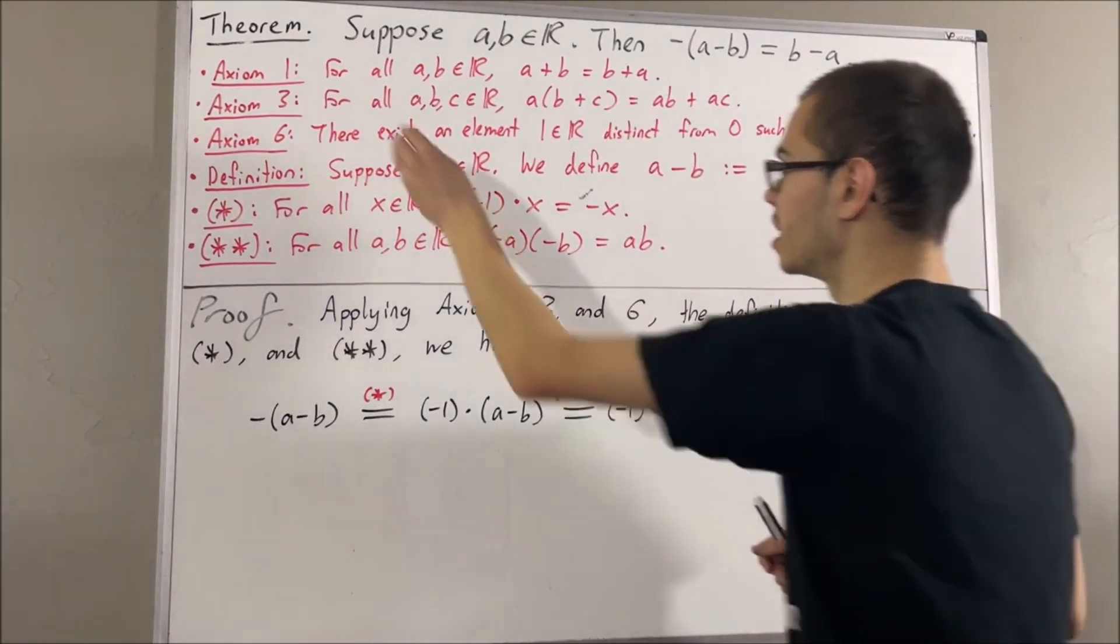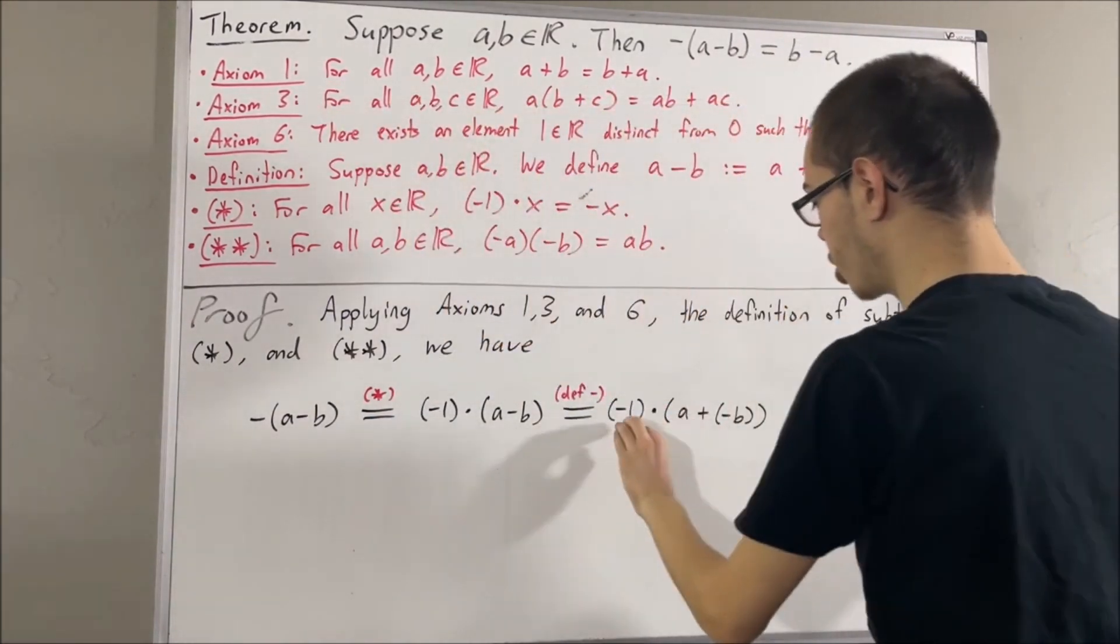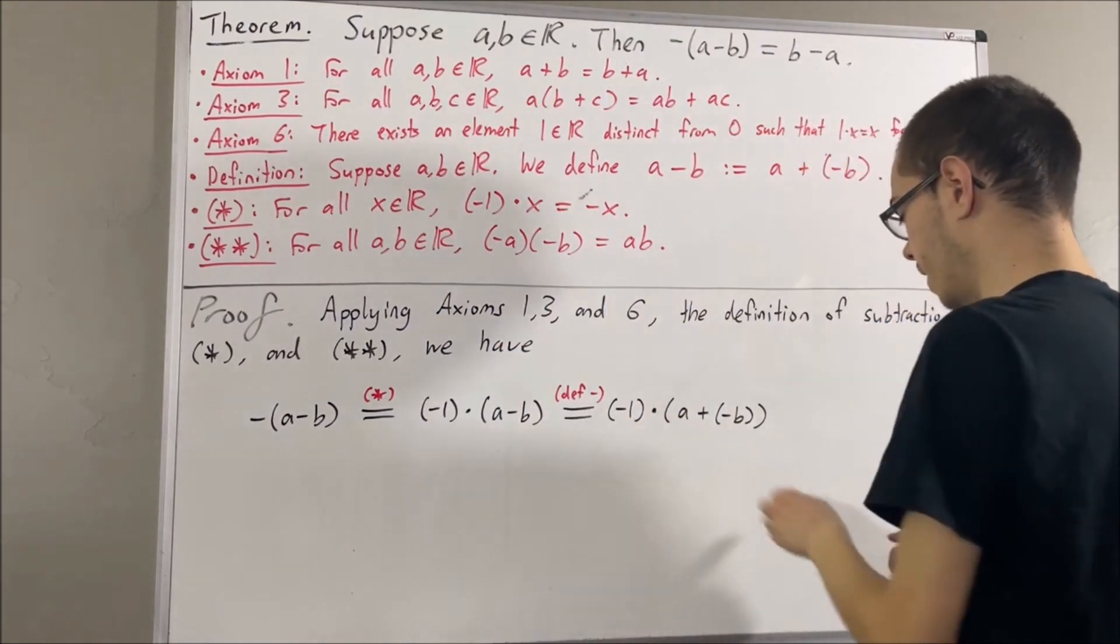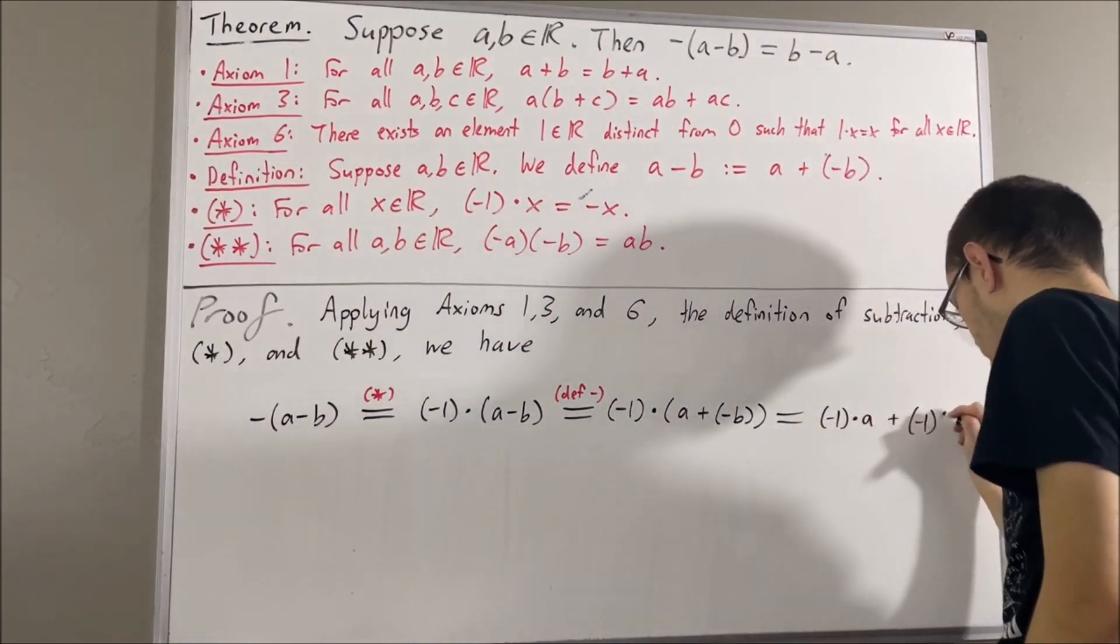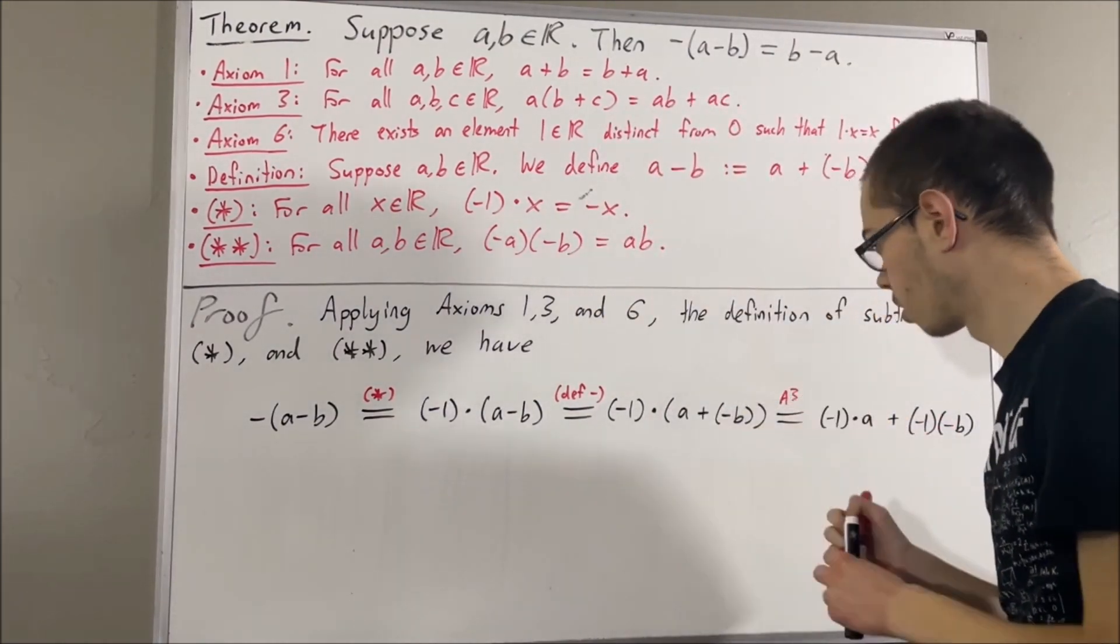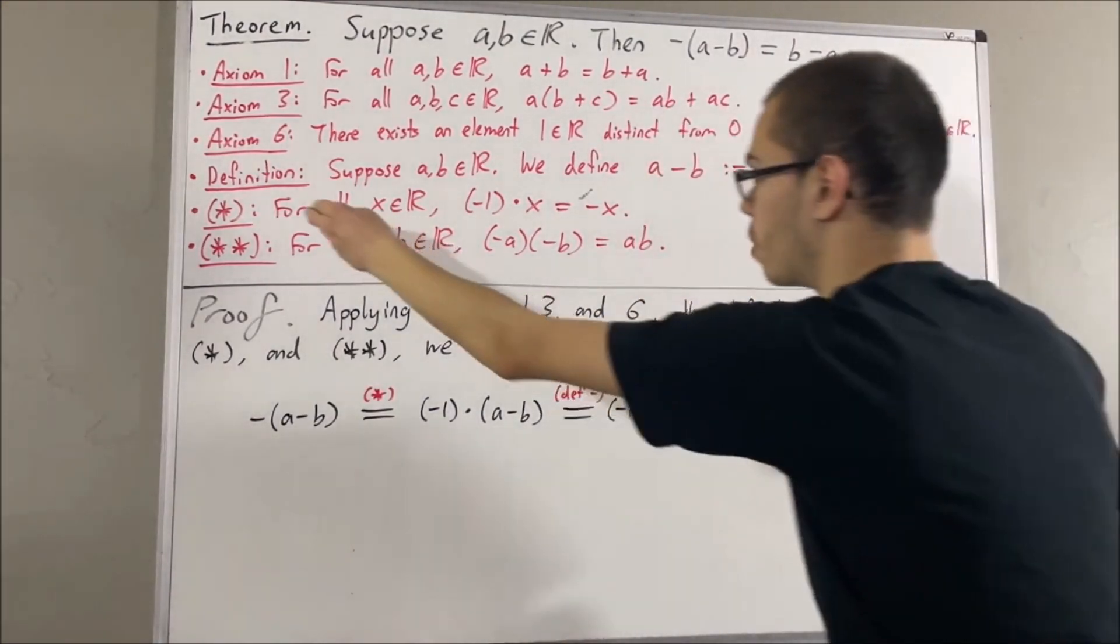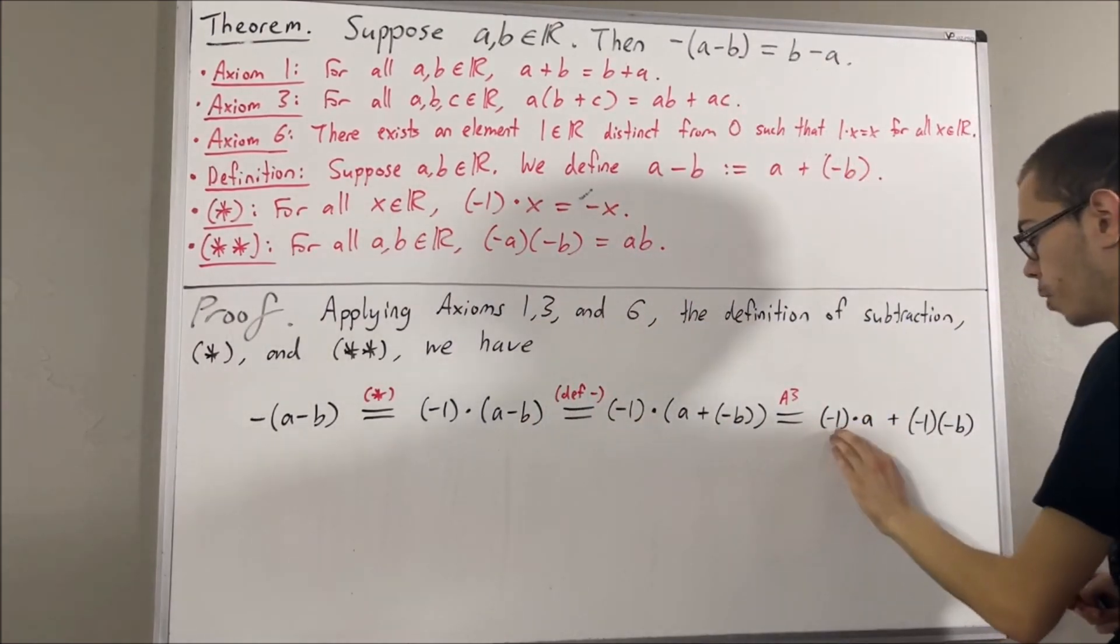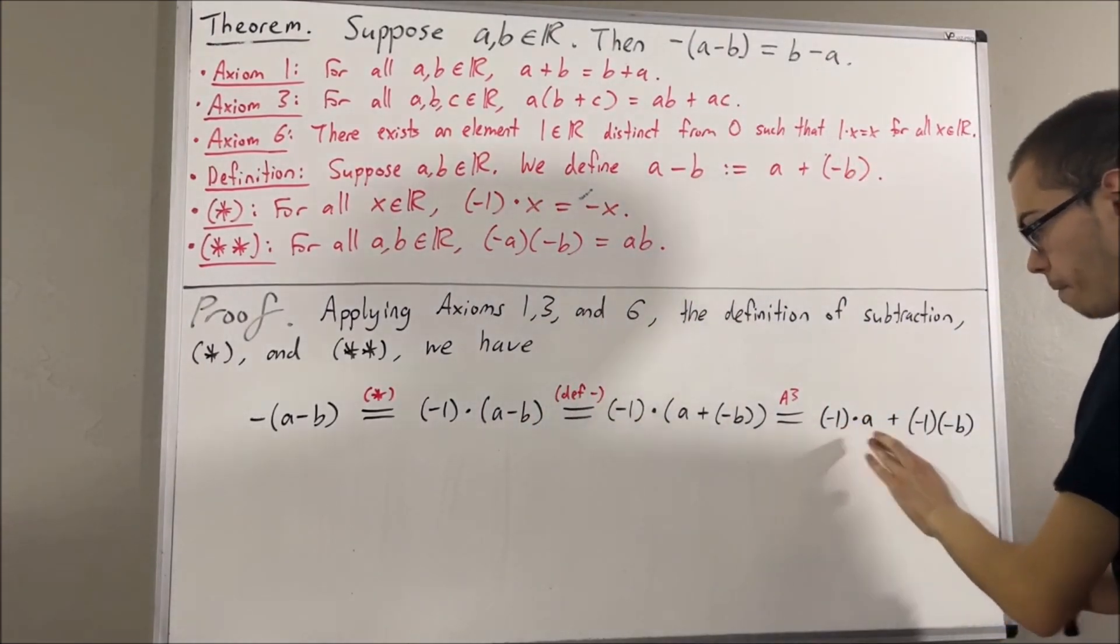And then, applying axiom 3, we can distribute the negative 1 across this parenthesis. And then, by star again, we have negative 1 times a equal to the negative of a.